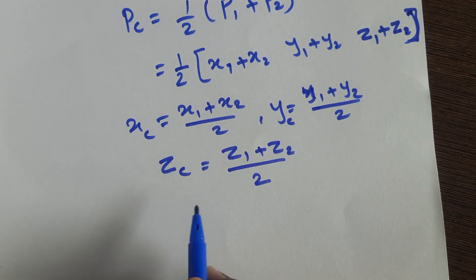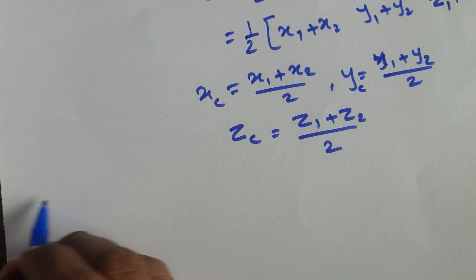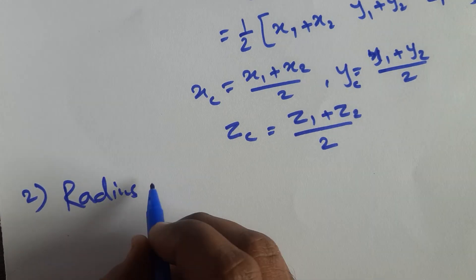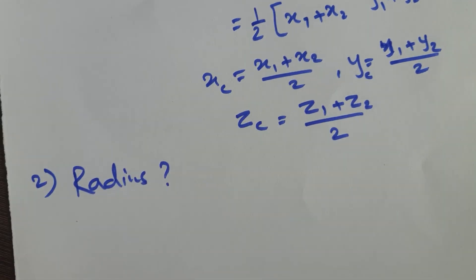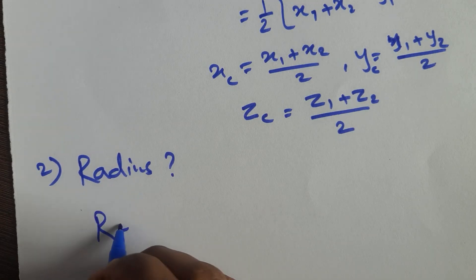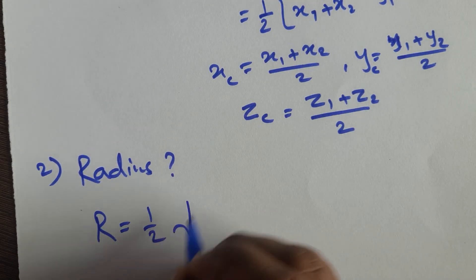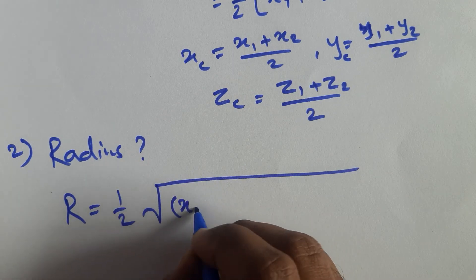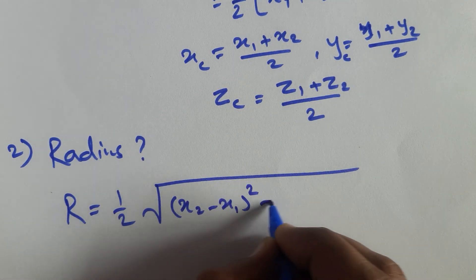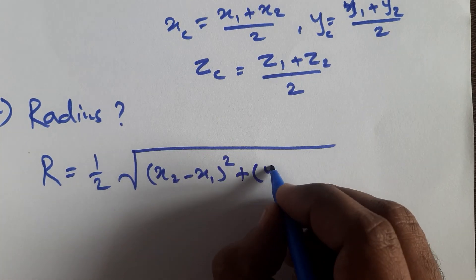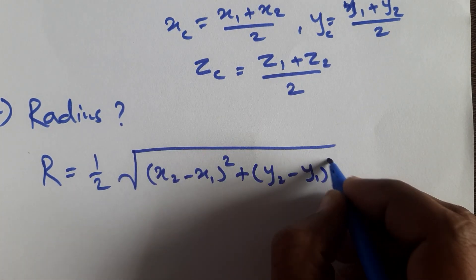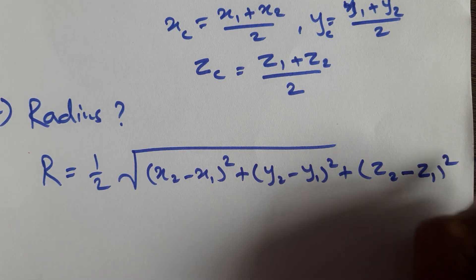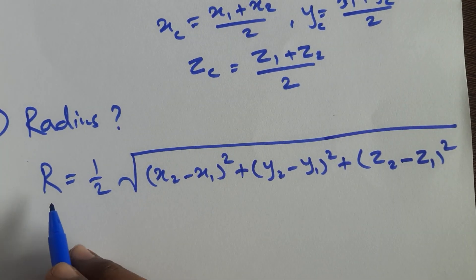Now next is radius. So how to find radius? Radius you can find from this formula: R is equal to half times the square root of (x2 - x1)² plus (y2 - y1)² plus (z2 - z1)².